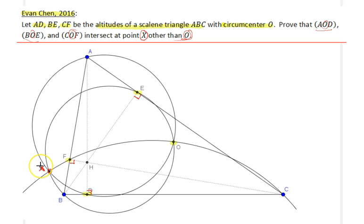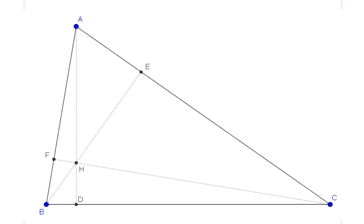Before I start with the main proof, I would like to prove a lemma — a simple preliminary step that will help you understand what's going on in this question, including the spatial nature of the orthocenter and the power of the orthocenter with respect to certain circles.